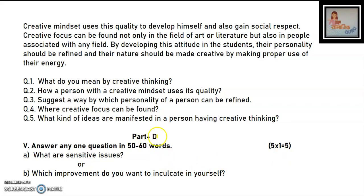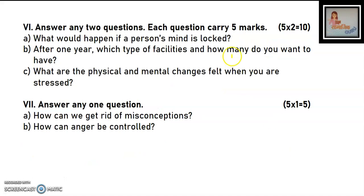Part D will be given, in which you have to attempt only one question in 52-60 words, and the question will be 5 marks. Next, 3 questions will be given in which you have to attempt only two questions, each question worth 5 marks, so the total will be 10 marks.